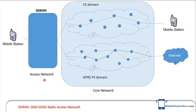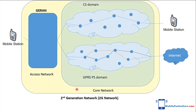The mobile station connects to the core network through the access network, which controls the communication between the mobile station and the core network. The access network name in GPRS is GRAN, which stands for GSM Edge Radio Access Network. This whole network that contains the access network and the core network forms the second generation, or 2G, network.